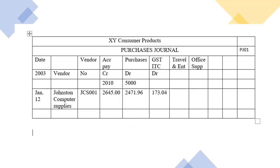Now let's see the next thing — our journal. This is how it looks. The date of the invoice is recorded, then the name of the vendor and the vendor's number. The accounts payable — which your company is going to pay — is credited with the amount of $2,645, which equals the total invoice. Then you have the purchases column debited with $2,471.96, and then you record your GST of $173. This is the purchases journal for items to be resold.